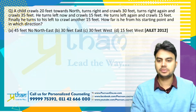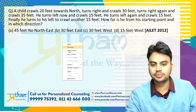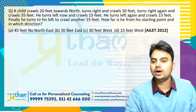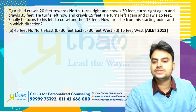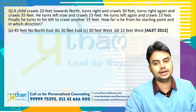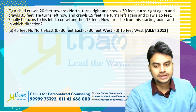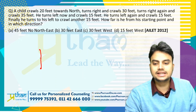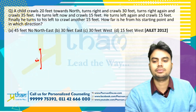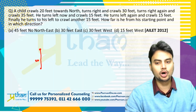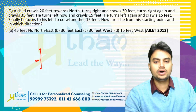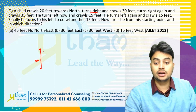This question is what you are seeing here. A child crawls 20 feet towards north. North is the upward direction. If the child is 20 feet north, this is 20 feet — this is the point where he has reached. Then what happened? He turns right and crosses 30 feet.